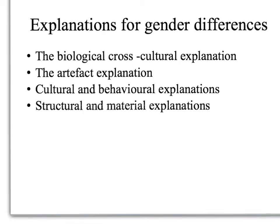There are four main explanations of gender differences in health. The first is the biological and cross-cultural explanation: evidence indicates that gender differences in mortality are largely biological in origin, with women living longer than men in most societies. However, social factors do influence mortality rates — for example, women's life expectancy improved more than men's during the 20th century because of a dramatic decline in deaths in childbirth. The artefact explanation suggests higher reported illness rates for women could simply reflect greater willingness to seek help when experiencing symptoms, not greater actual sickness.